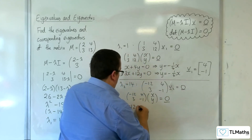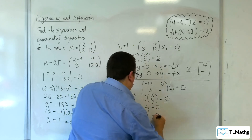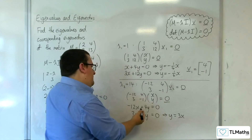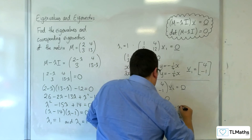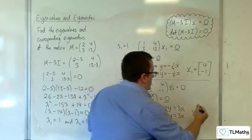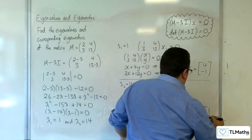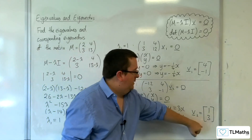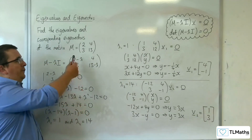So we have minus 12x plus 4y equals 0, and 3x take away y is equal to 0. So this one's getting you y is equal to 3x, clearly. And so is this one, multiplying through by minus 4. So that's also y equals 3x. So then v2 — pop in a nice value of x, so x is 1 — the y value is going to be 3. So you've got the corresponding eigenvector to go with the eigenvalue. And that is how we can find the eigenvalues and eigenvectors for this example.